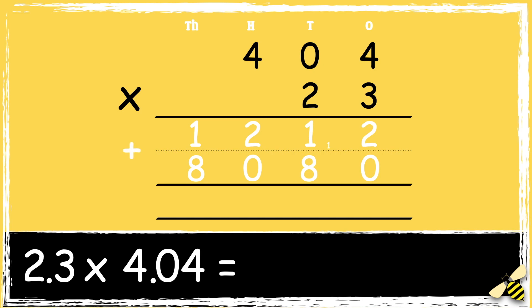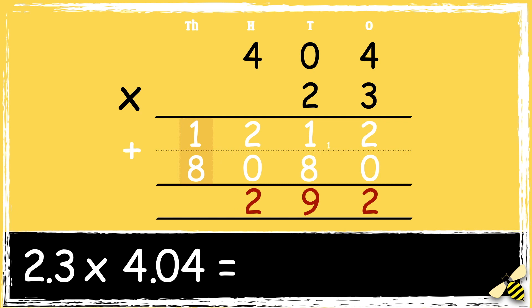The next step is to add the two answers together. So 2 add 0 is 2, 1 add 8 is 9, 2 add 0 is 2, and then 1 add 8 is 9.